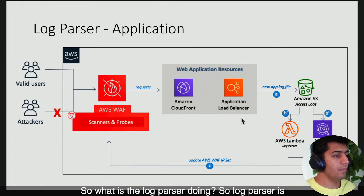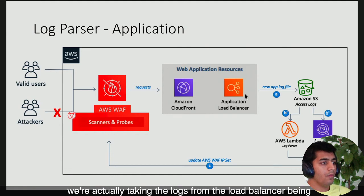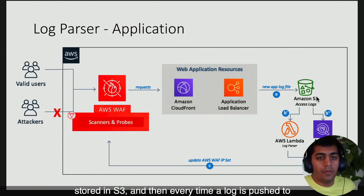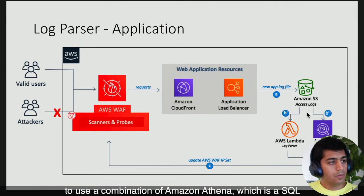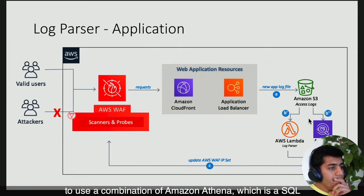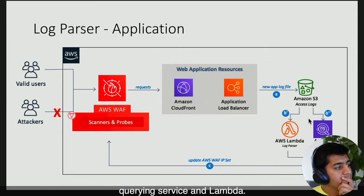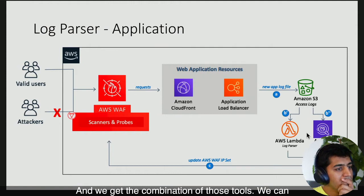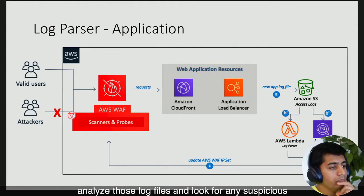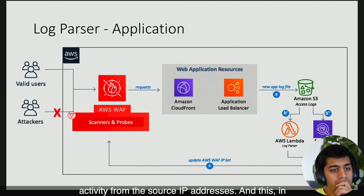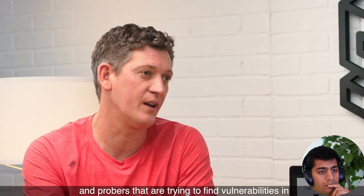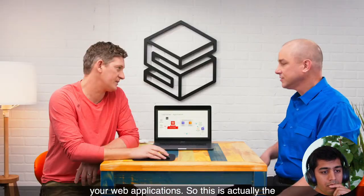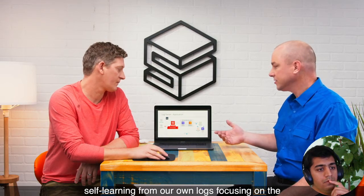The log parser takes logs from the load balancer being stored in S3. Every time a log is pushed to S3, that triggers an event. We use a combination of Amazon Athena — a SQL querying service — and Lambda. Together, we can analyze those log files and look for any suspicious activity from source IP addresses. In this particular instance, we're looking at scanners and probers trying to find vulnerabilities in your web application.